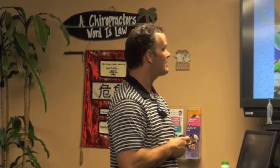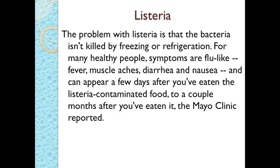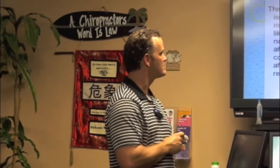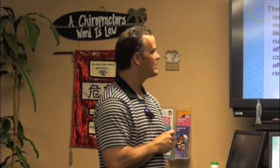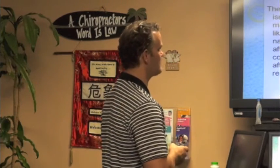Listeria symptoms are flu-like: fever, muscle aches, diarrhea, nausea. But if it gets into your nervous system, it can cause convulsions and more severe symptoms. People with immune systems that aren't 100% and very young people are usually affected the most. Even if you have cantaloupes and wash them, it's not good enough because it can get into the meat of the fruit itself — so you just have to throw them away if they're from Jensen Farms.